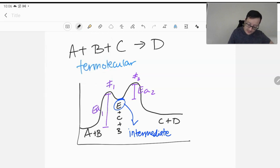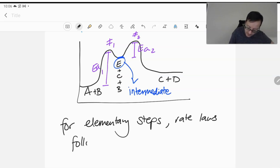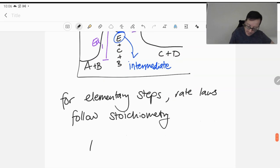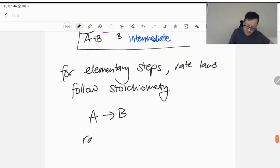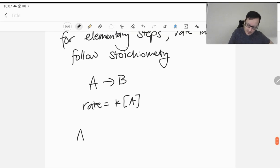But we're looking at elementary steps. The rate laws follow the stoichiometry. So that means if we have this reaction, A turns into B, the rate for this would just be K times A. And if we have another reaction, a bimolecular reaction, the rate law for this equation would be K A squared.